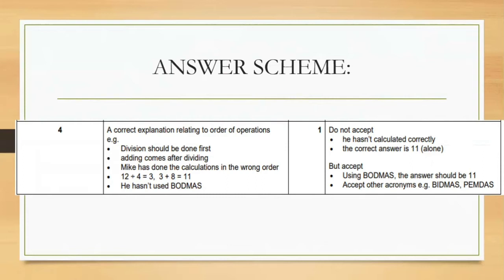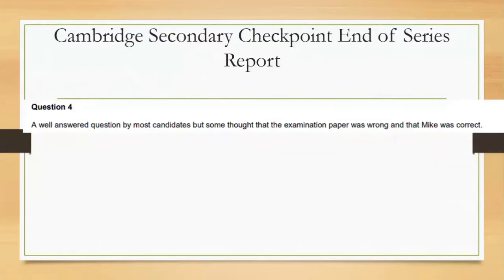This is the end-of-series report — a report given by the examiner commenting on answers students have provided. According to the examiner, this question was well answered by most candidates, but some thought the examination paper was wrong and that Mike was correct. These end-of-series reports help students identify mistakes they make regularly.